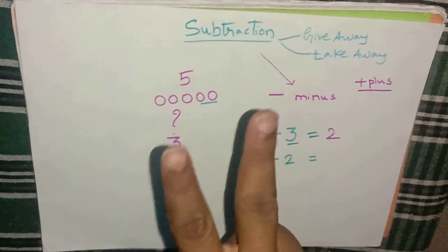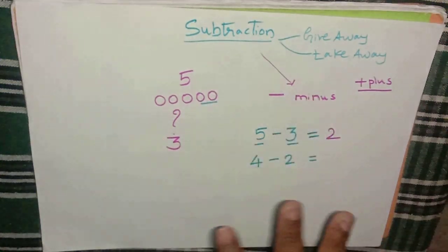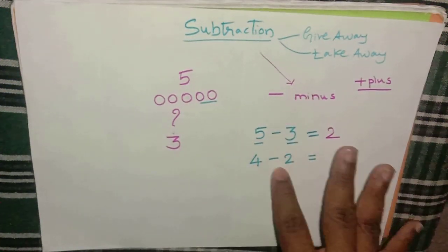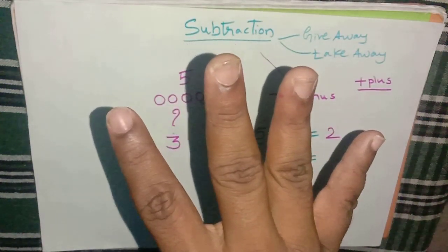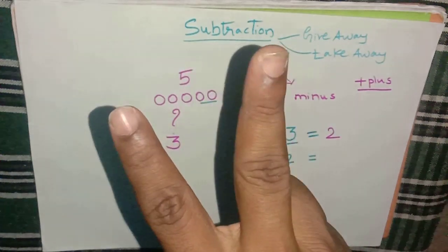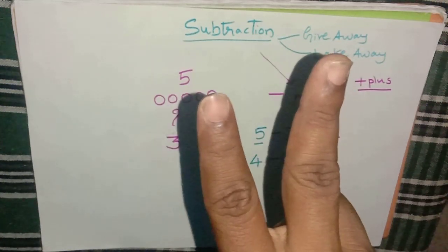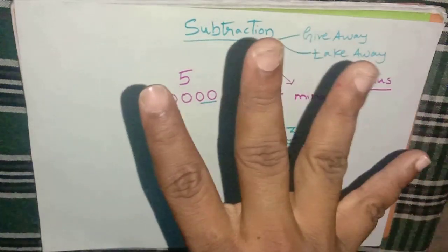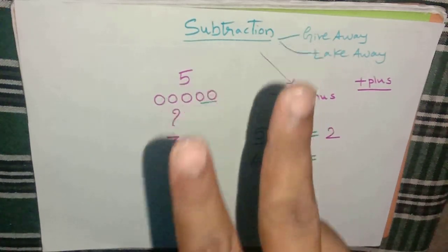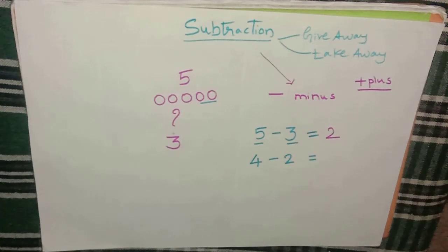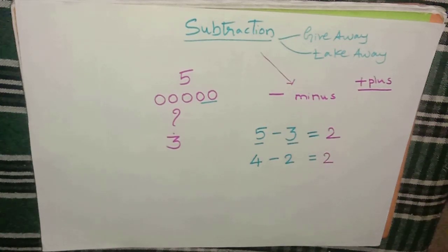One, two, three, four — so these are four fingers. Now we have to minus how much? Two. Out of four, you have to remove two: one, two. Left with how many fingers? One and two. So out of four if you deduct two, you get two. Four minus two equals two.